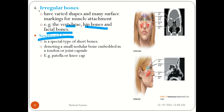The sesamoid bone is a special type of short bone, denoting a small nodular bone embedded in a tendon or joint capsule. The patella, or kneecap, is a classic example of a sesamoid bone.